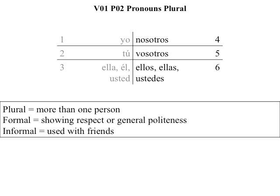Here are some clues to distinguish between them. Nosotros will often replace things like 'Bob and I,' 'Sarah and I,' or 'Bob, Sarah, and I.' It's somebody and I which gets nosotros as a replacement.